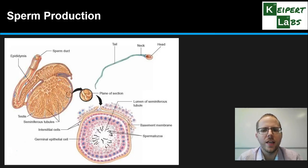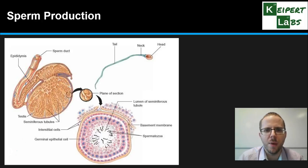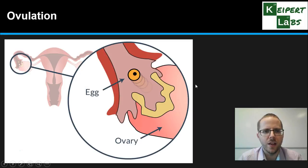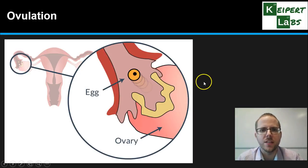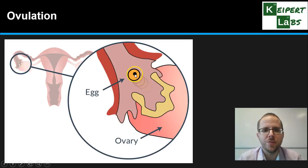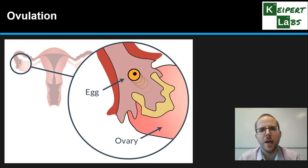We're going to start by looking at how the gametes are produced. Here we're talking about sperm production inside the testes in the male, happening inside the seminiferous tubules, and then the sperm move to be stored in the epididymis. We can also see the process of producing an ovum — an egg — inside the ovary. Eggs are produced in the ovary and every month one or potentially more eggs are released to travel towards the uterus. So sperm production in the man and ovulation in the woman are the first stages of the process.